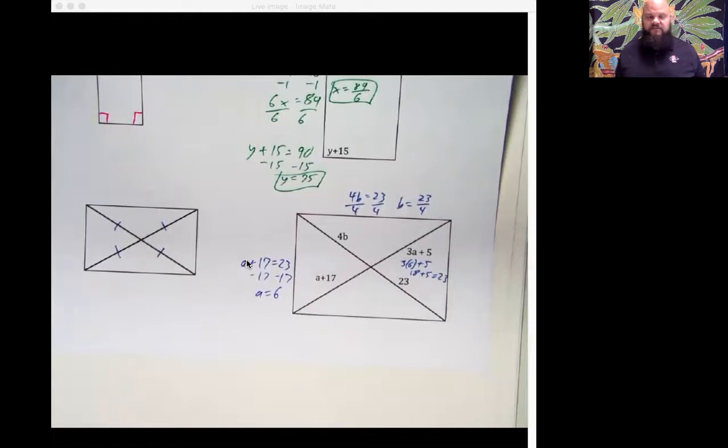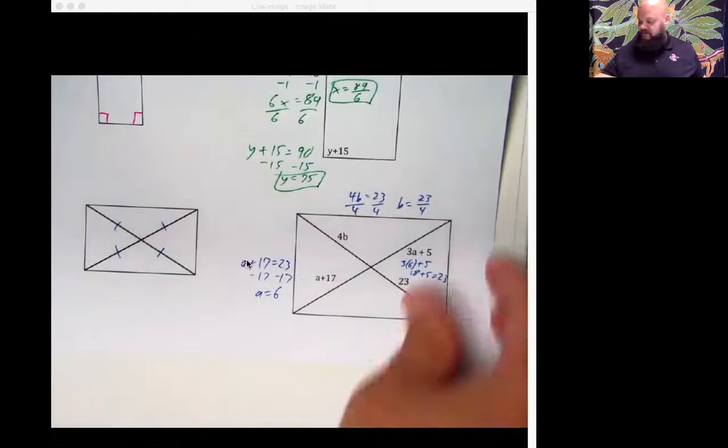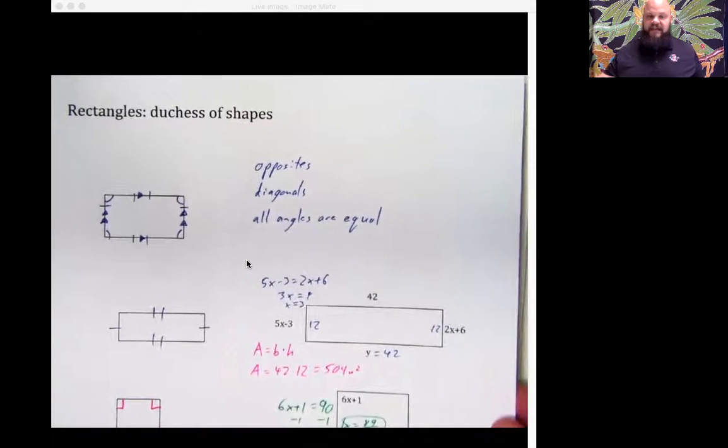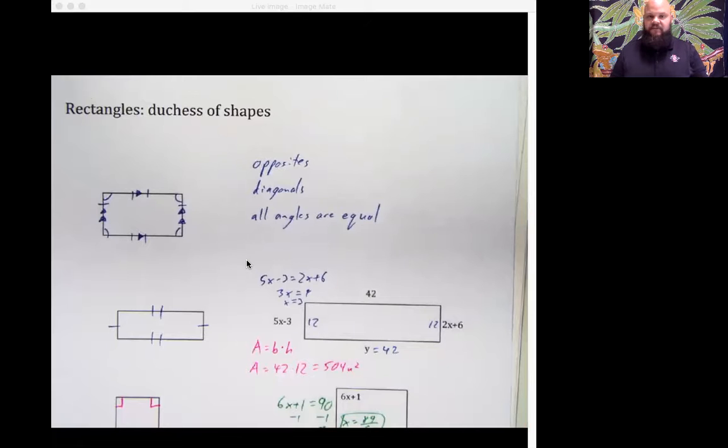There it is, folks. Rectangles, the duchess of shapes. Has all of the things that parallelograms have going for them. And now, the added bonus of all the angles being equal, or if you prefer, all of the angles being 90 degrees. There you go. Hey, stuff ain't changed. Real crazy. Stay safe out there.